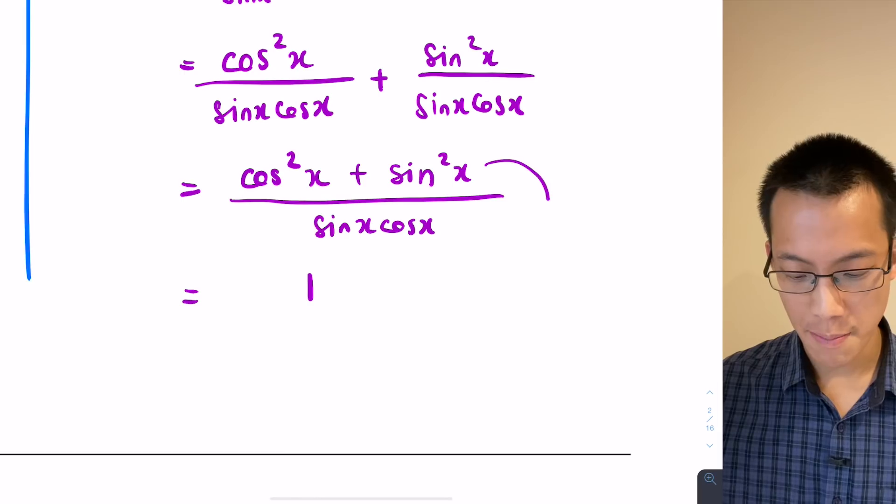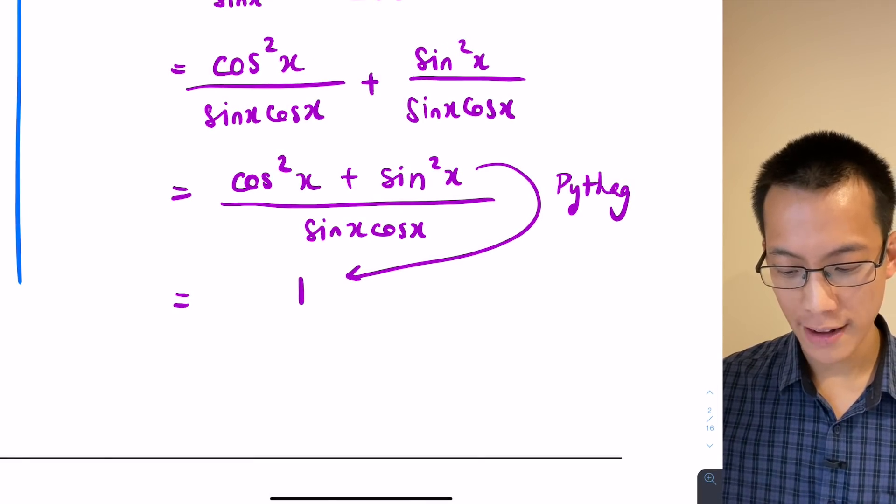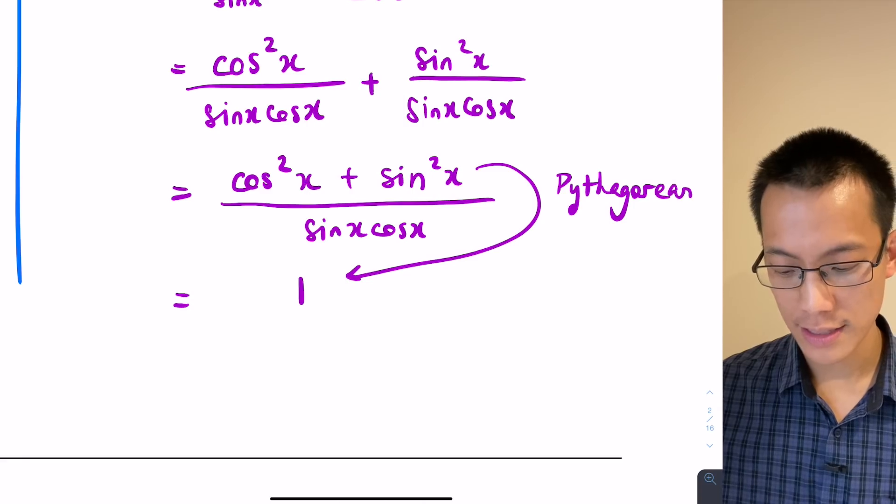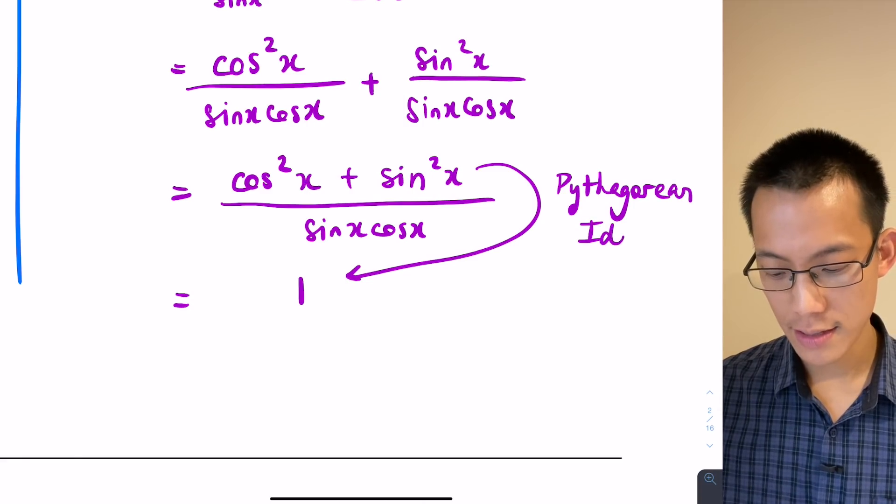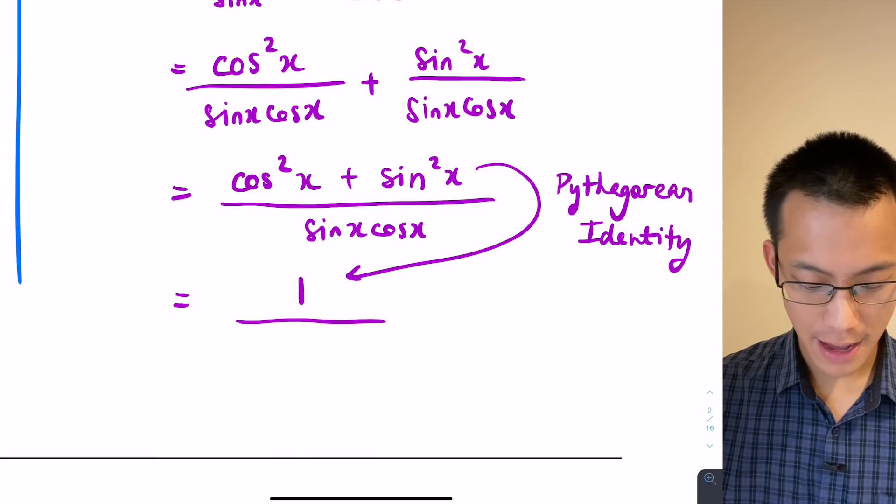That's divided by the sin x cos x that we got as our common denominator. And from this point, you can see this leads us to where our working was before.